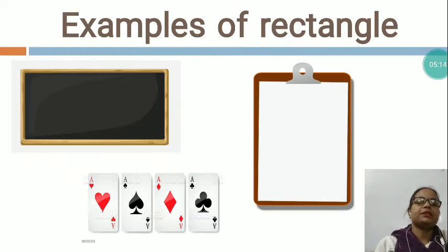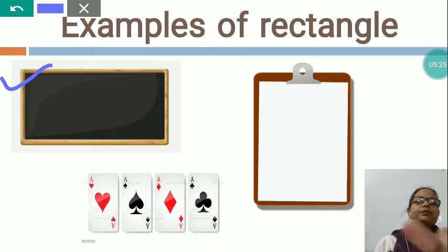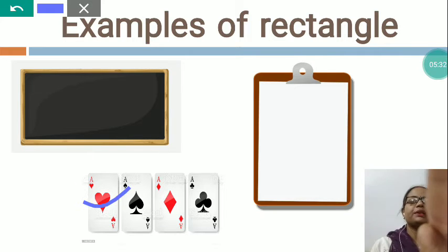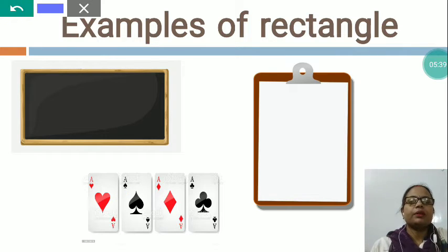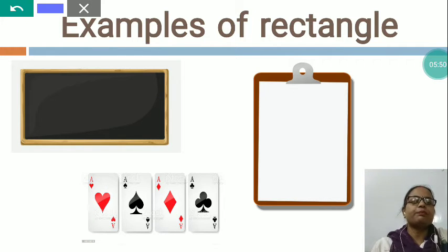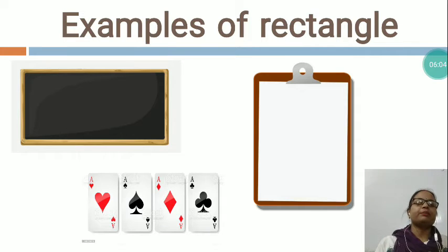I would like to show you some examples of rectangle. These all are the examples of rectangle. This is a blackboard — which shape? Rectangle shape. This is playing cards — which shape? Rectangle shape. This is a clipboard — which shape? Rectangle shape. These all are the examples of rectangle.